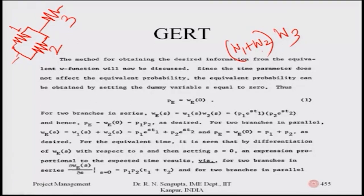Continuing the discussion: for two branches in parallel, the equivalent W function is the sum of them. When the dummy variable W is set to zero, e to the power of any value multiplied by the S value of zero becomes one, since e to the power zero is one. Based on that, the W function gives P1 and P2. For series, it is multiplication; for parallel, it is summation.